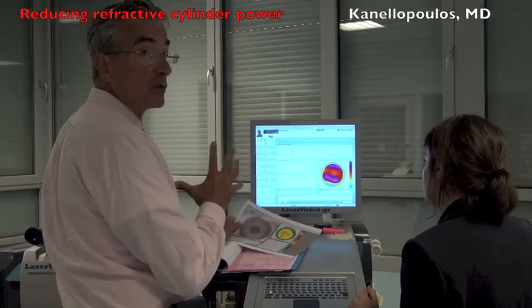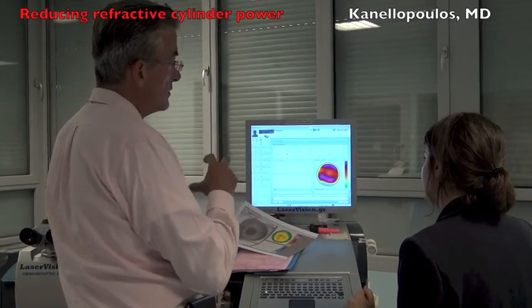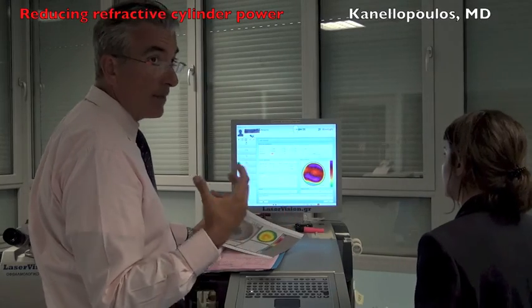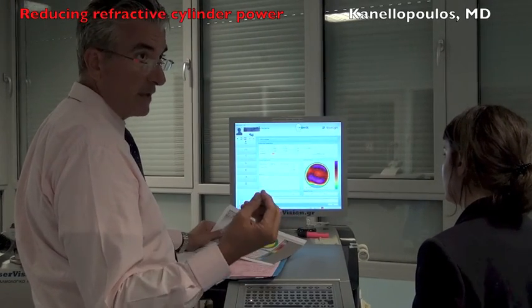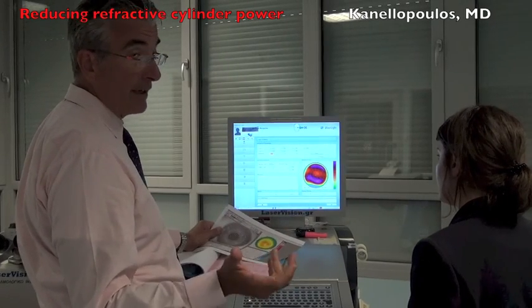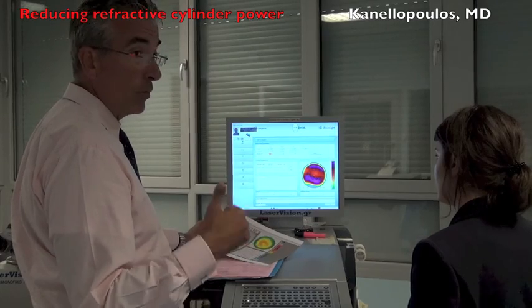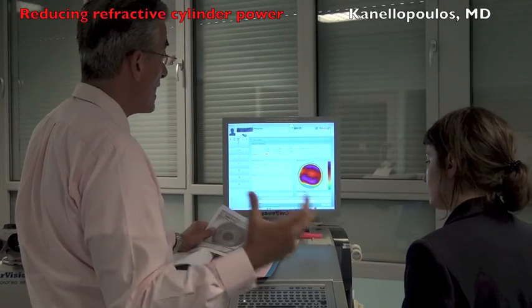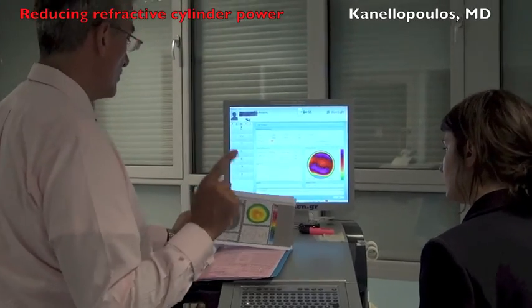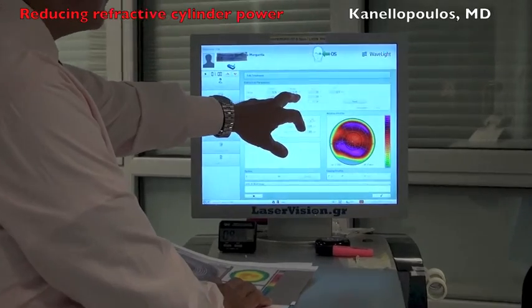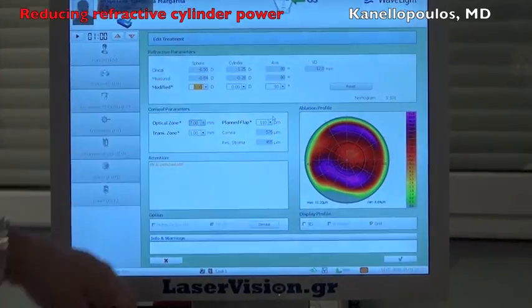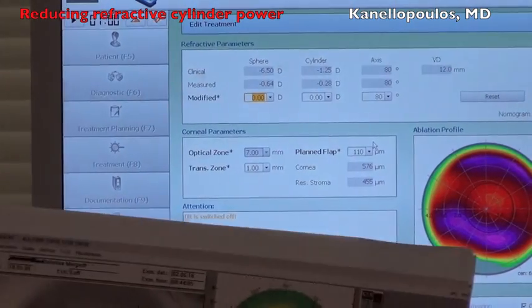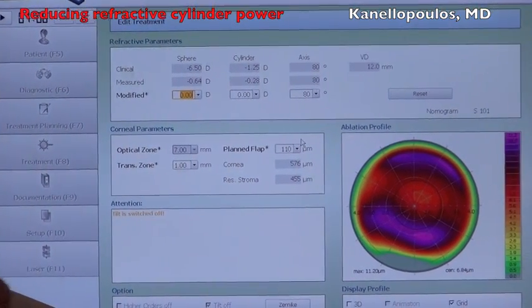The majority of cases are going to be like the one we just saw. The topography customized platform will suggest treating more cylinder than we're refracting. We know this is happening because there's accommodative cylinder from the lens of the eye neutralizing the topographic astigmatism. But we know accommodative cylinder is not stable and with time will go away. We want to treat the corneal cylinder with topography-guided ablations to get maximum refractive effect. Here we're going to see the opposite: a refractive cylinder of 1.25 diopters at 80 degrees and 6.5 diopters of myopia. The topography map suggests we only treat minus 0.25 of cylinder at 80 degrees.